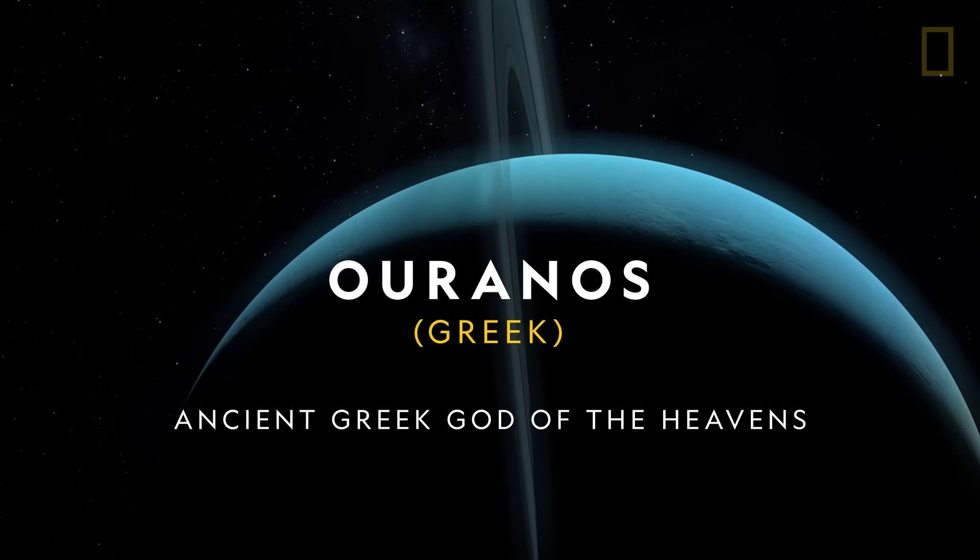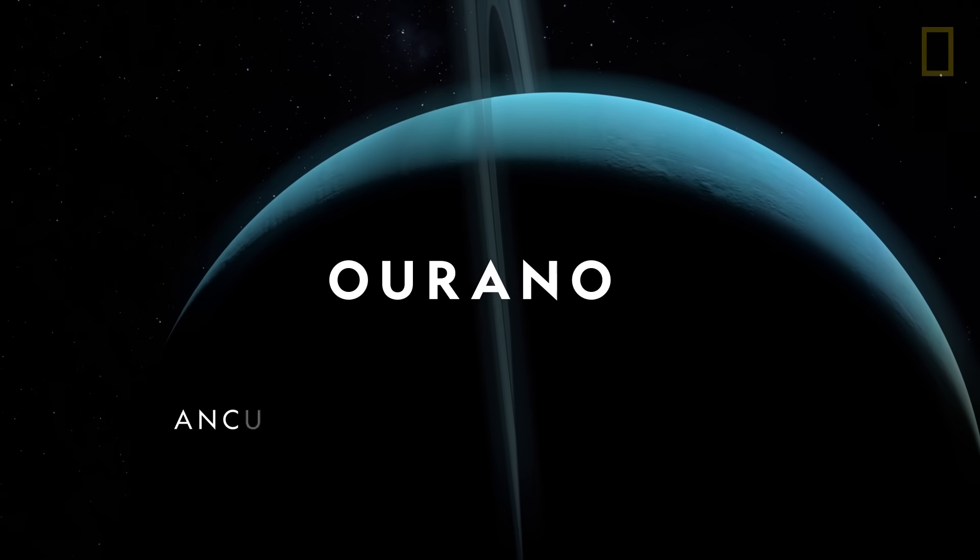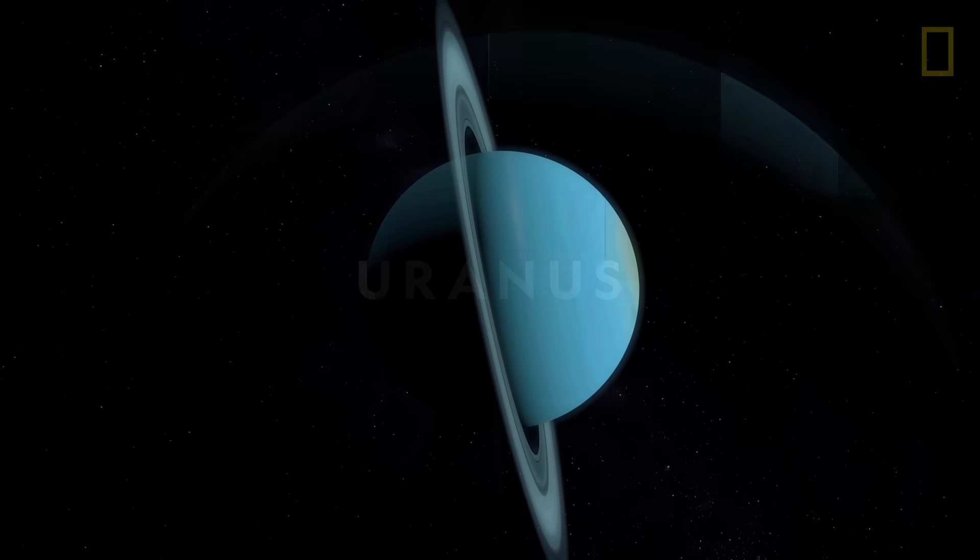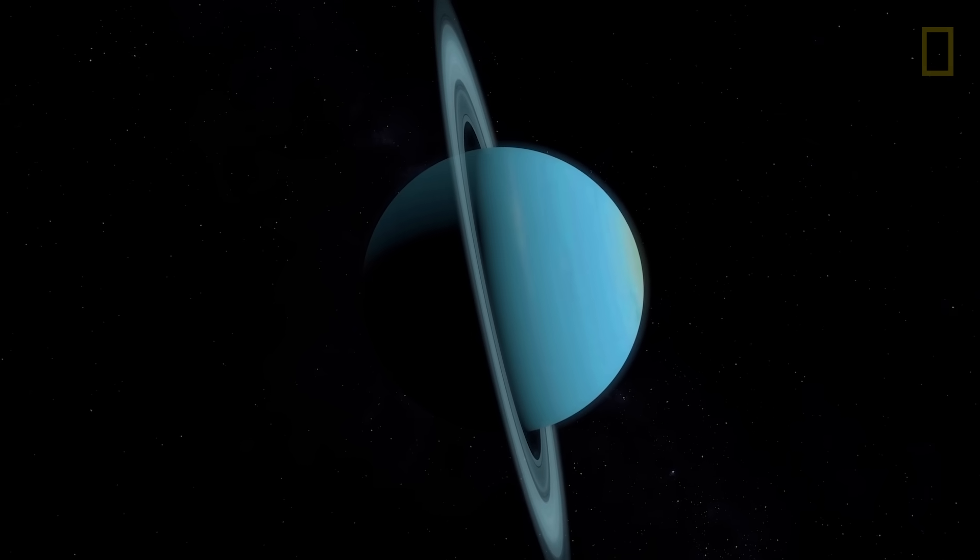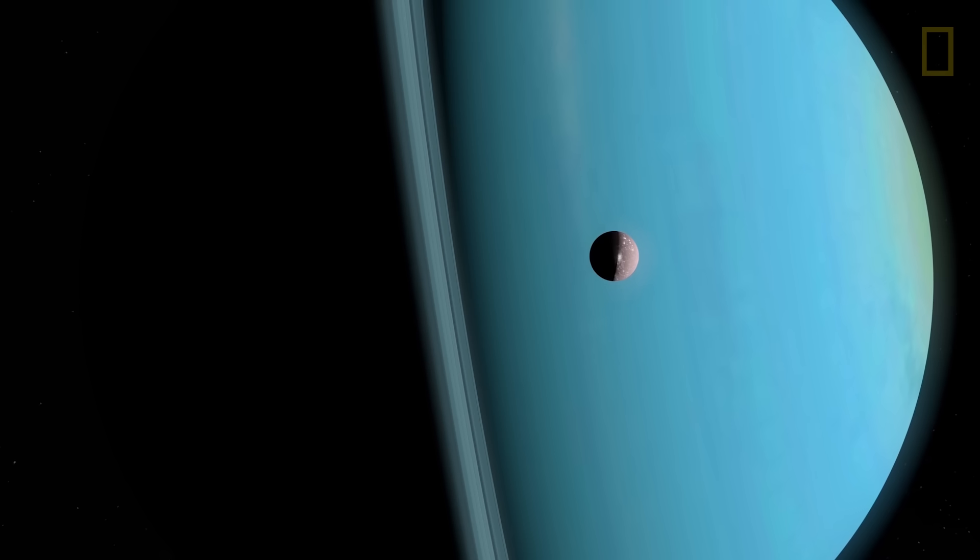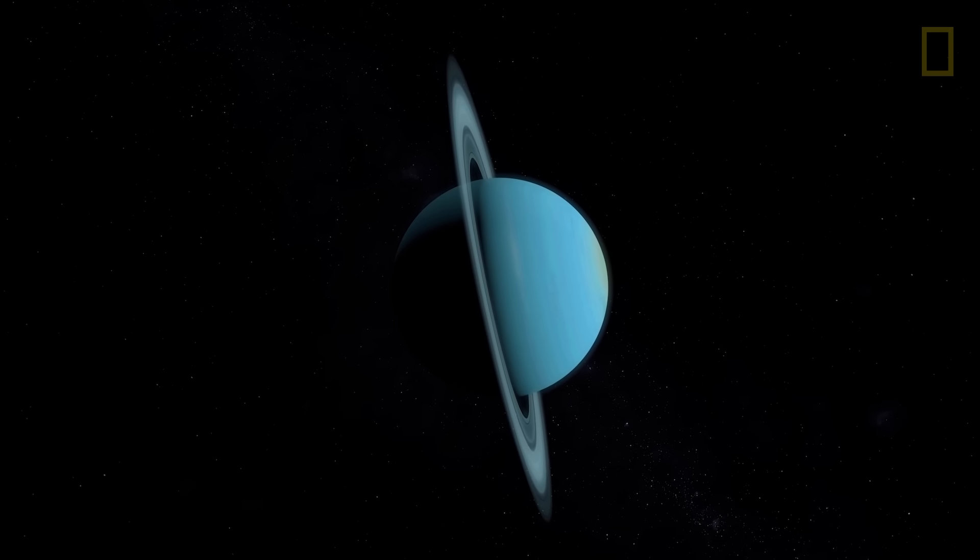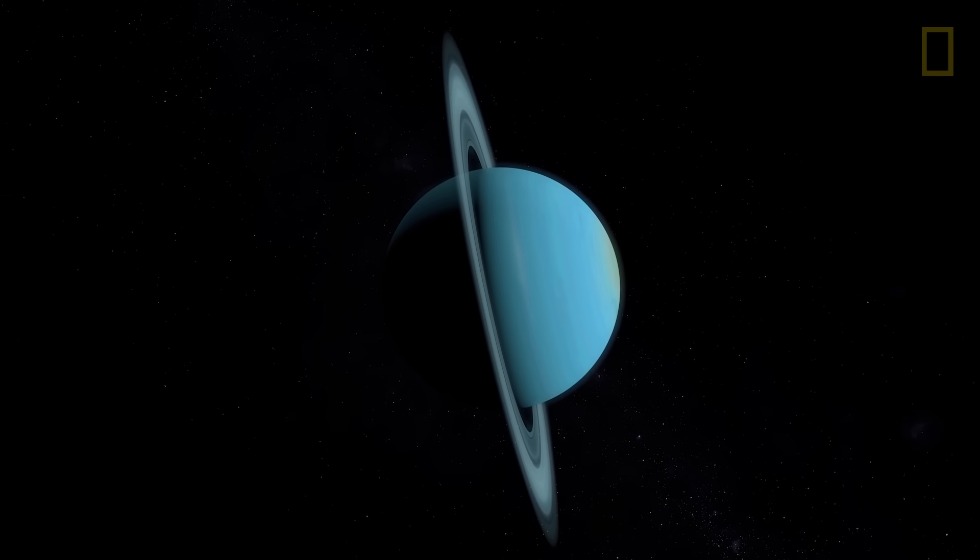Uranus, the ancient Greek god of the heavens, was then Latinized to be Uranus. To this day, Uranus is still the only planet that veered from tradition with an ancient Greek namesake, a status most fitting for a planet beyond convention.